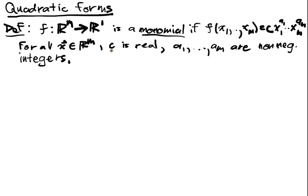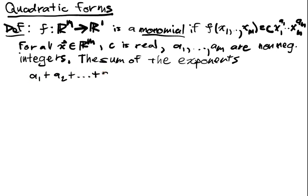That's a monomial, and the sum of the exponents a1 plus a2 plus am is the degree of F.